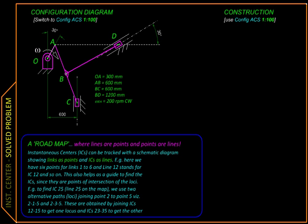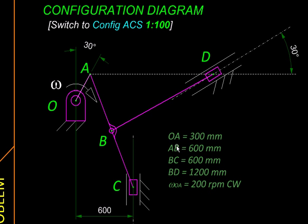In this numerical problem we will be using instantaneous centers to do velocity analysis of this 6 bar mechanism. We have been given all the link lengths and angles so that we can plot a space or configuration diagram to scale.